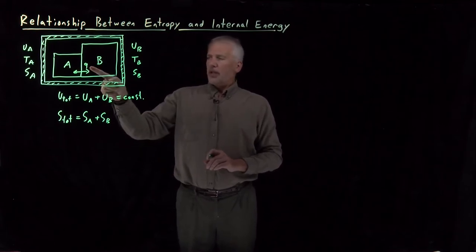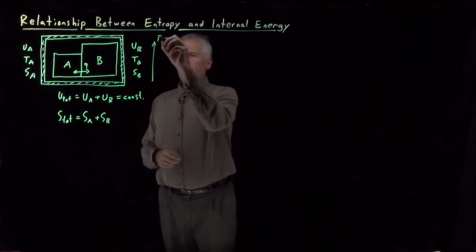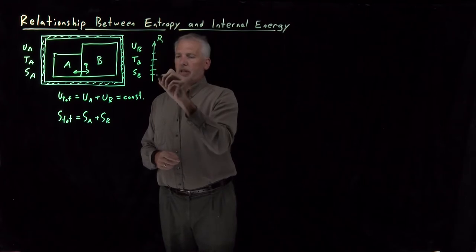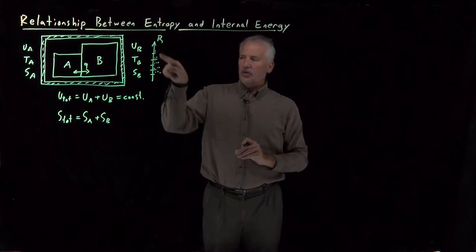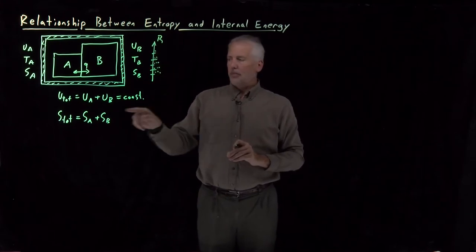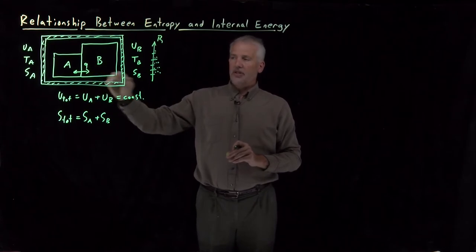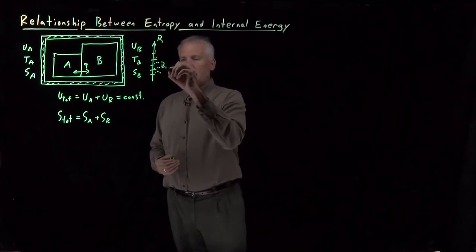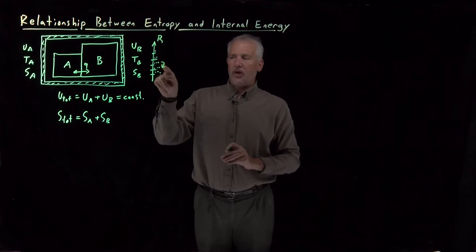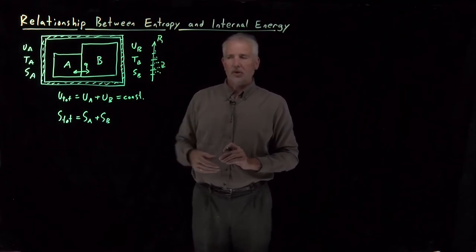So thinking back to remember what the heat is, this system B, there might be a bunch of different energy levels. I might have particles occupying different energy levels of the system. When heat is transferred from one to the other, heat is, by definition, heat is not changing the energy of the states themselves, it's changing the probability that those states are occupied. So perhaps some particles will fall down from higher energies to lower states or vice versa. That corresponds to heat being transferred.